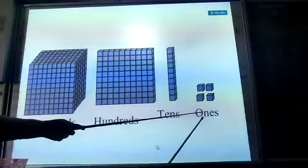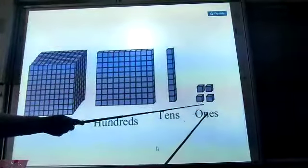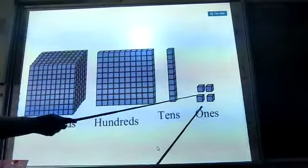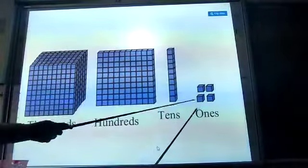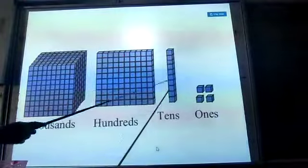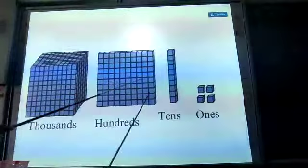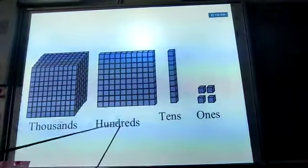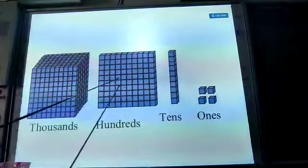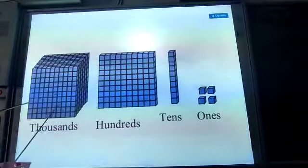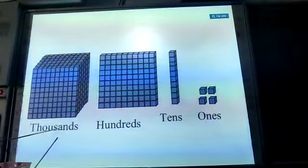The first thing you need to understand is that you are familiar with place values. We take one cube for ones. If we arrange these cubes in groups of tens, it represents 10. If arranged in groups of 100, it represents 100. If arranged in groups of 1,000, it represents 1,000.